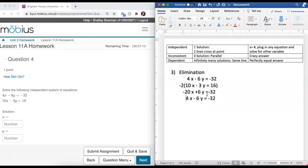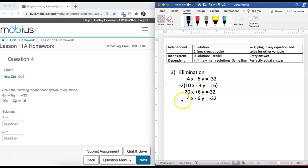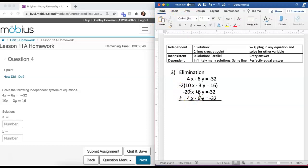So I end up with negative 2 times positive 10, which is negative 20x, negative 2 times a negative 3 makes a positive 6y, and then negative 2 times a positive 16 gives me a negative 32. Now I have changed this equation, this one has not been changed, so I'm going to bring it down here, and that's the one that I'm going to be combining with to eliminate. There we go, and now I have positive 6y minus 6y.